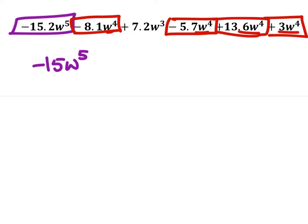And it may be helpful to notice that each term takes the operation to its left, whether it's addition or subtraction, as its sign. For example, we treat this as a negative 8.1, this is a negative 5.7, positive 13.6, and a positive 3, all of them multiplied by w to the power of 4.